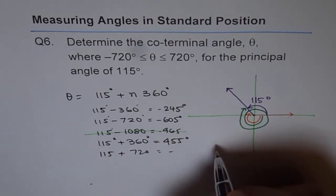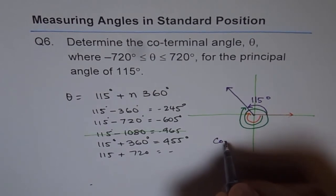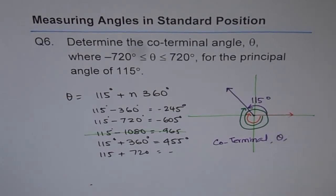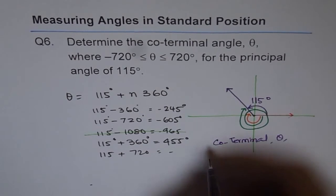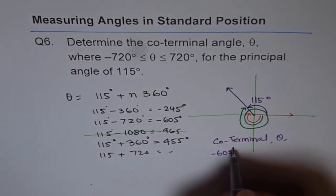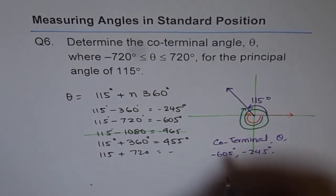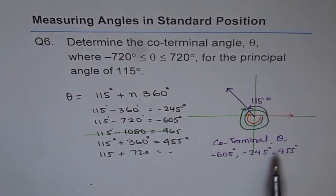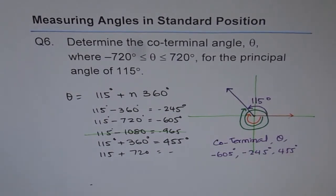Therefore, the co-terminal possible answers for us — let us write them down. The co-terminal angles theta are: minus 605 degrees, minus 245 degrees, and plus 475 degrees. These are all the possible co-terminal angles for the given principal angle of 115 degrees within the region of minus 720 to plus 720. Thank you.